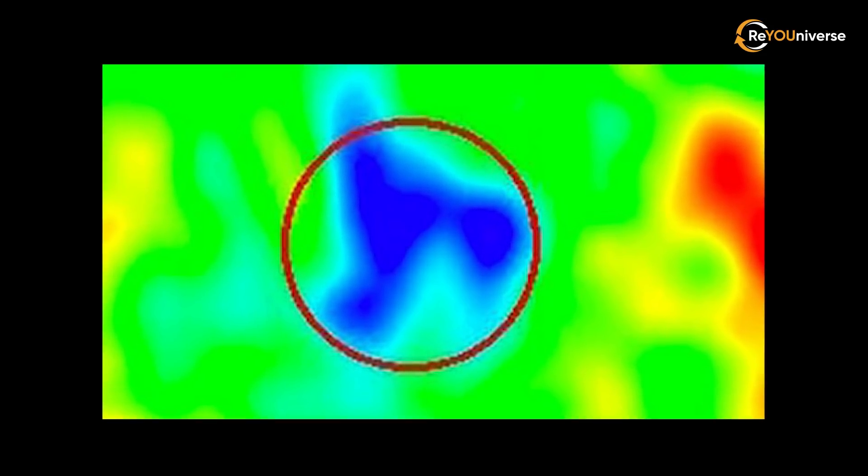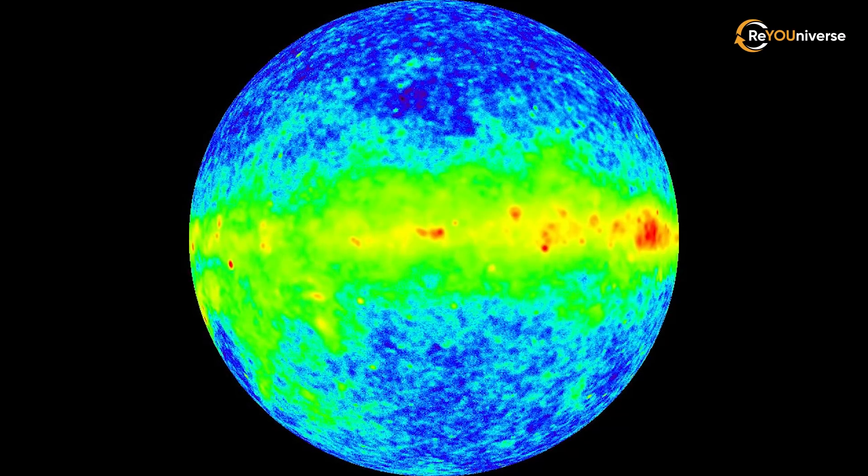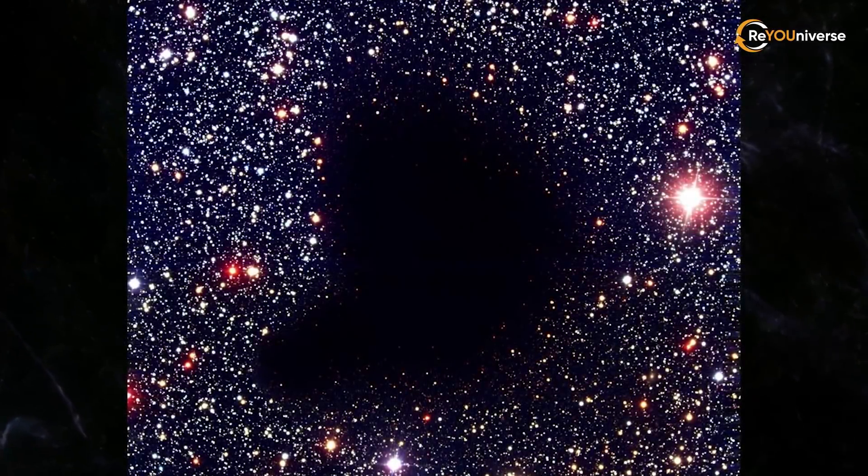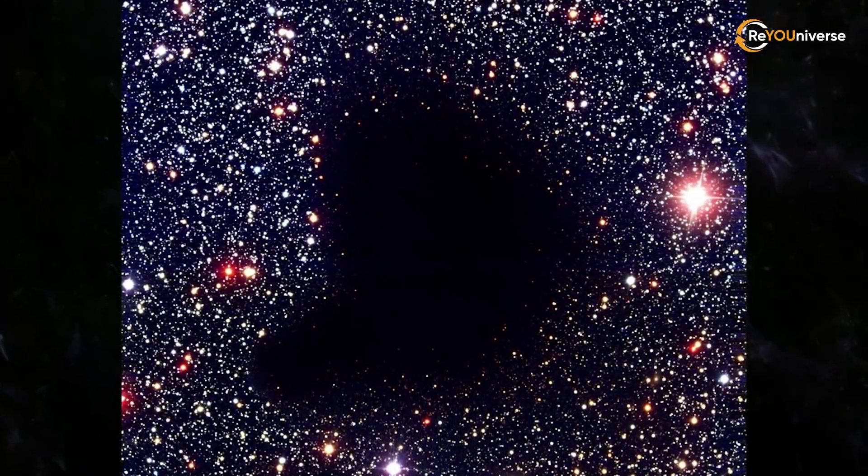And this is what it looks like. The circled area is a cosmic microwave background cold spot. That is, this area is even colder than the universal microwave background radiation. One might wonder, what's so special about it? In fact, there are two things.